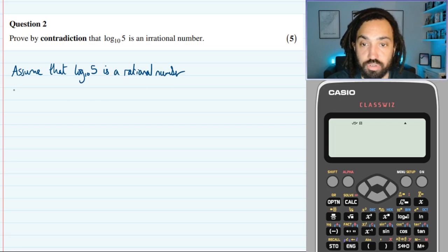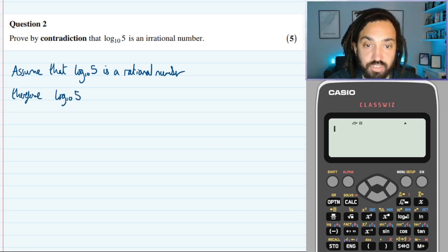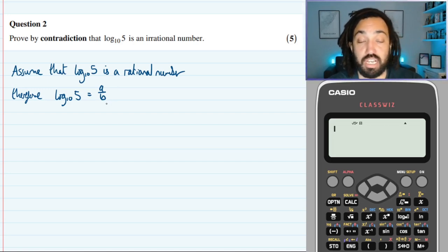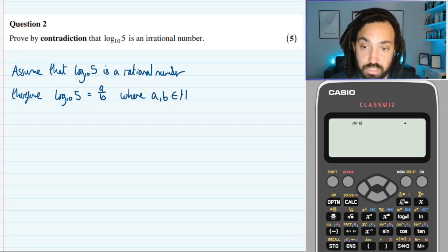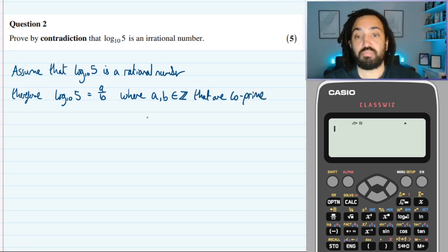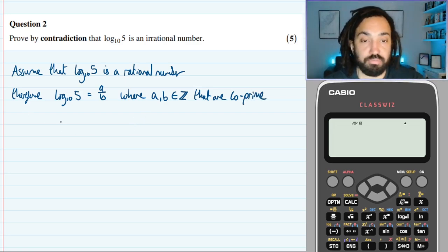And if that is true, then I can write therefore log base 10 of 5 is equal to a over b, because a rational number is commutative as a fraction, essentially in its simplest form. Therefore, log base 10 of 5 is equal to a over b, where a and b are natural numbers—or not necessarily natural numbers, sorry—integer numbers. They're integers that are co-prime, which means that they don't have any common factors between them. Okay, that's perfectly fine.